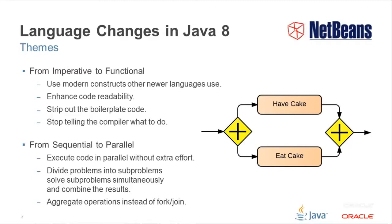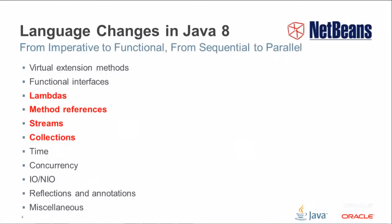In this screencast, we are not going to cover all the Java 8 language changes, but just the most important ones — those dealing most directly with these two themes, shown here in red: functional programming over imperative programming, and parallel processing over sequential processing.